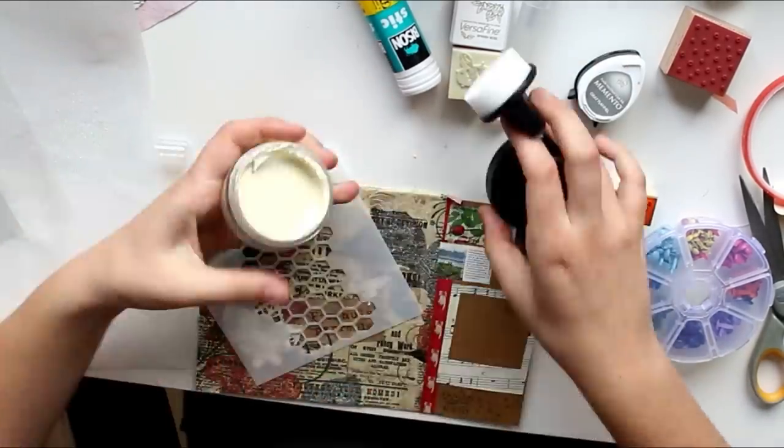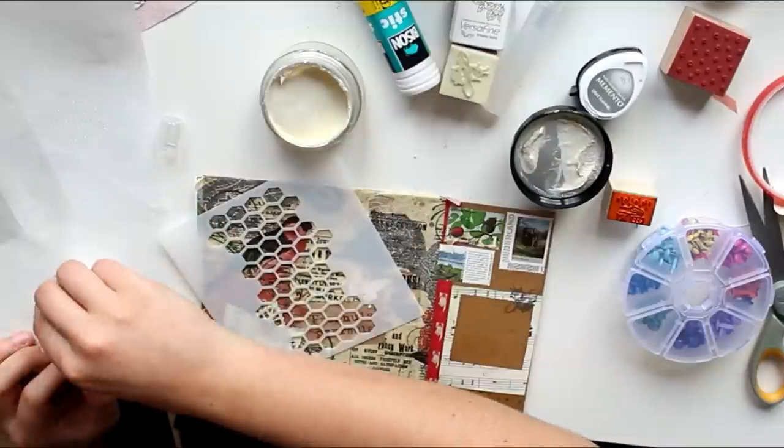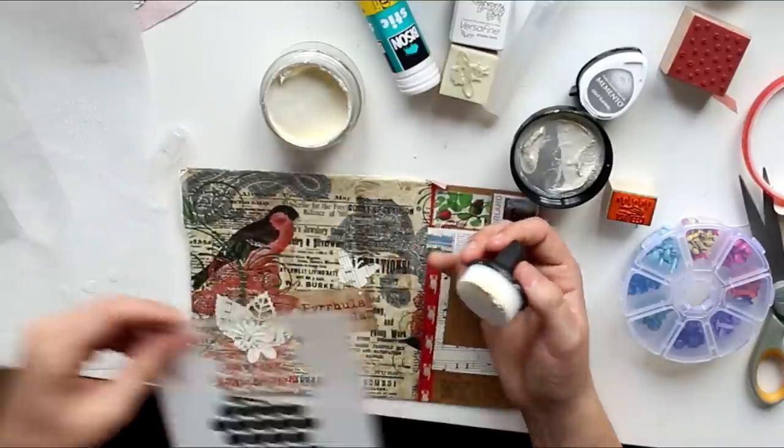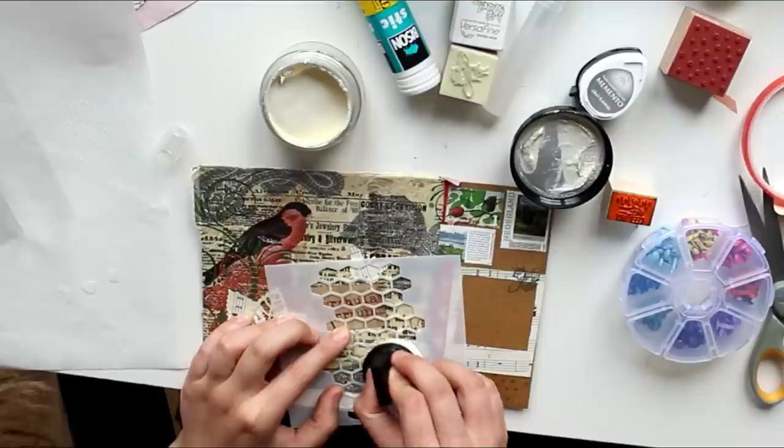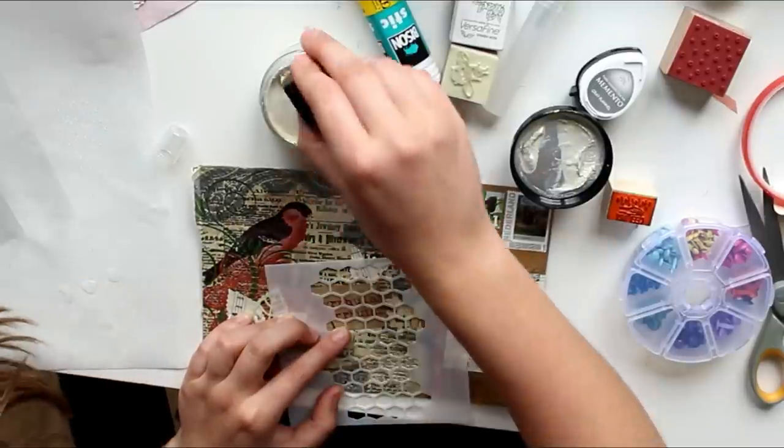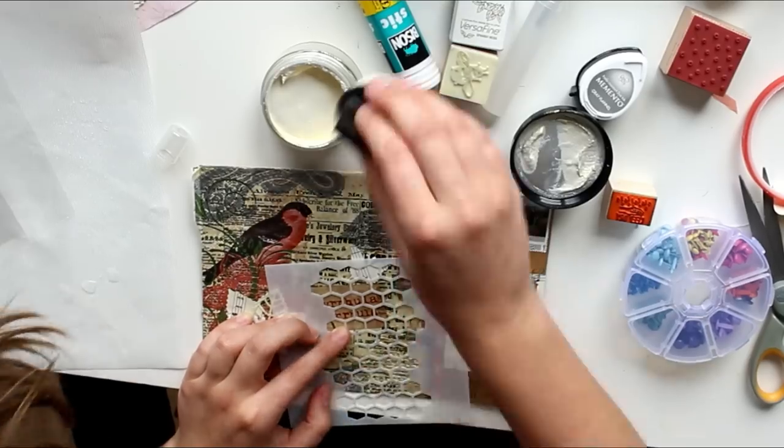What I'm using is I think it's cosmic shimmer, or it's at least called gilding paste. I don't know what gilding means but it's gilding paste. The color is called enchanted gold. I love that name.